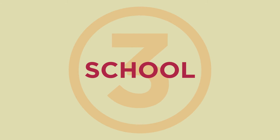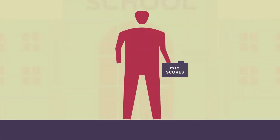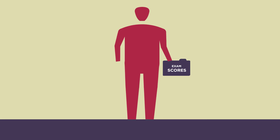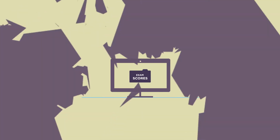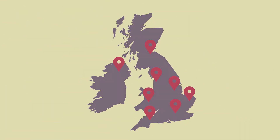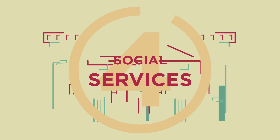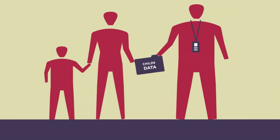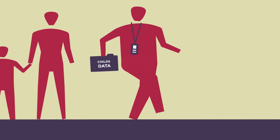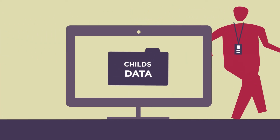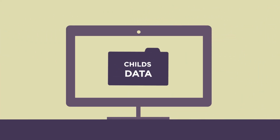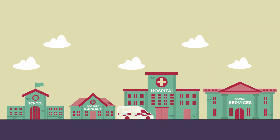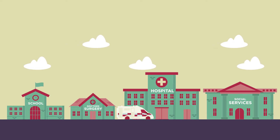School examination scores are recorded for all pupils by schools and then also held centrally, so that they can look at the results at a national level. Local authorities collect data on children that interact with social services, and some of this is reported and held nationally too. All this data provides important information about these services, including whether they are effective and how much they cost.